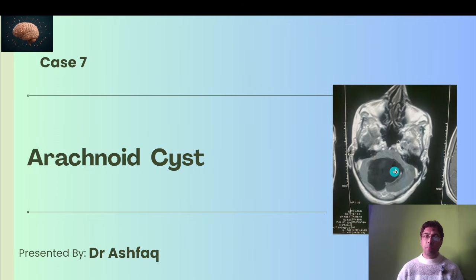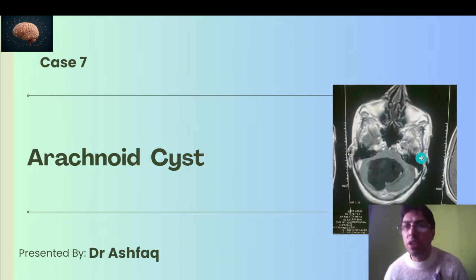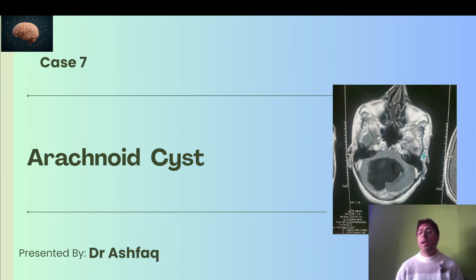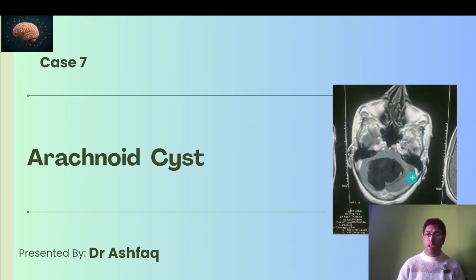This lesion is an arachnoid cyst. You know the meninges — dura mater, arachnoid, and pia mater — and here we have an arachnoid cyst, a cystic fluid-filled cavity. It is usually seen as an incidental or congenital anomaly. Patients are usually asymptomatic; only larger cysts require surgical intervention. These are quite benign and should be monitored by repeated radiographic techniques.